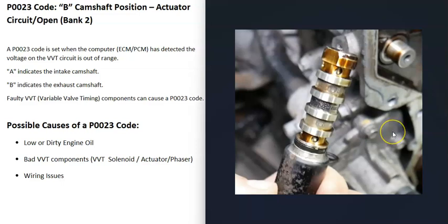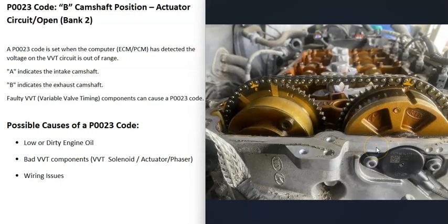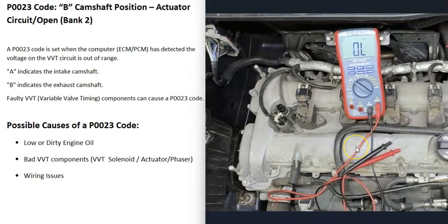The next possible cause is an issue with one of the variable valve timing components, such as a bad solenoid or a bad actuator. The actuator or phaser is located right in front of the cam where the timing chain or timing belt operates, working with a solenoid that supplies oil pressure to it. The computer controls the solenoid, which controls how much pressure flows through the actuator, and this controls the whole system.